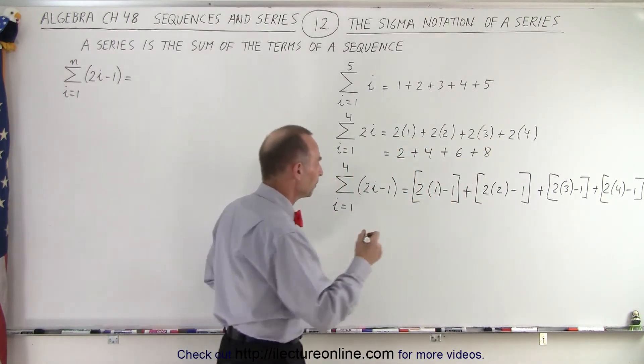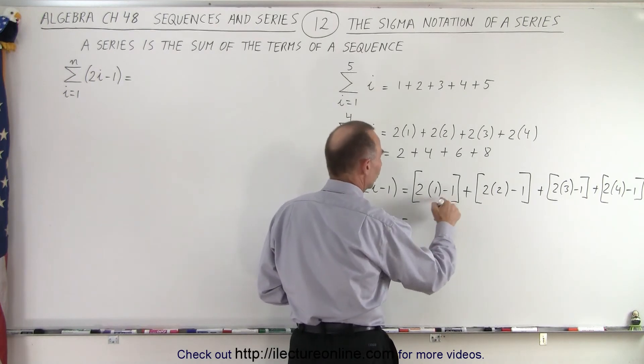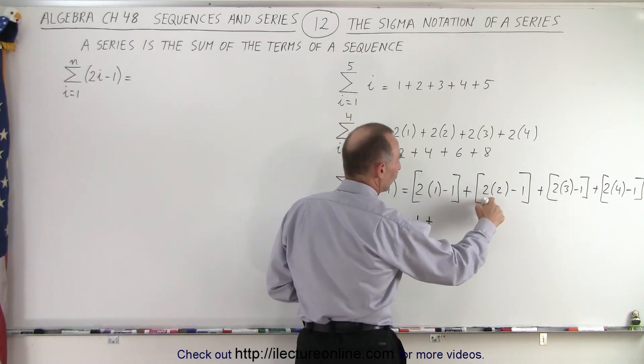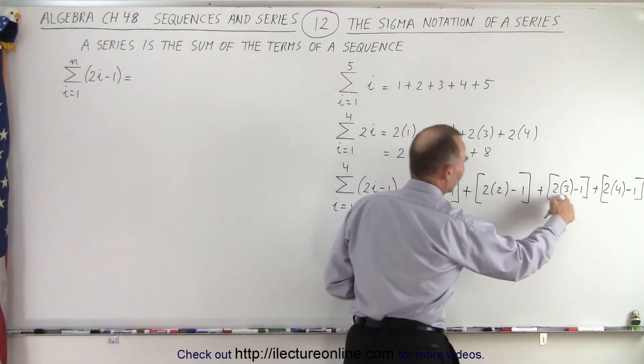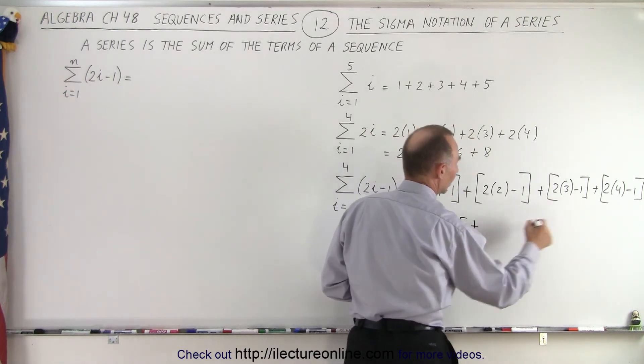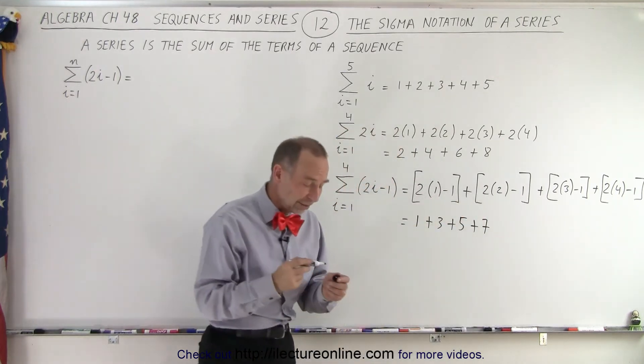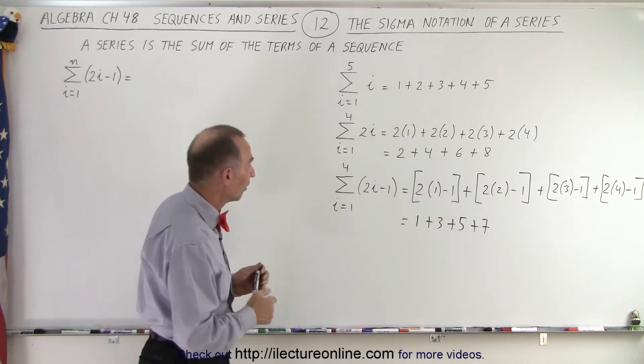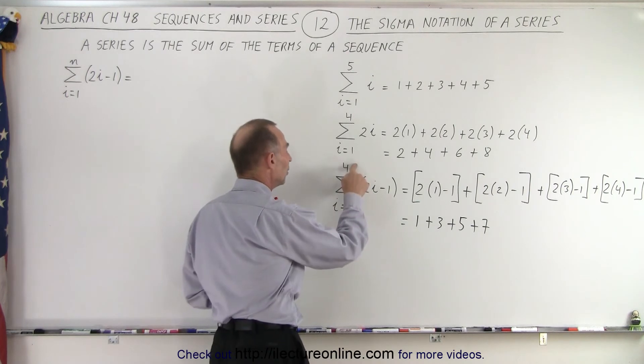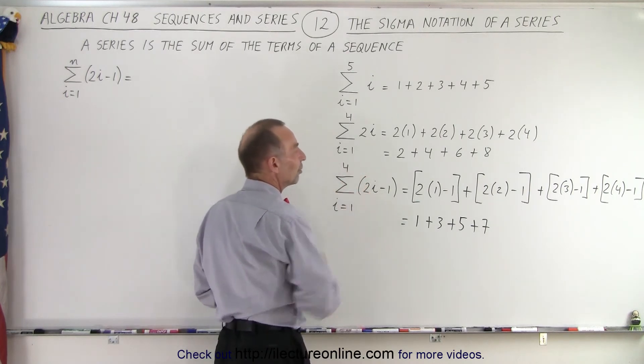Well let's finish it up. So this is equal to 2 minus 1 which is 1 plus 4 minus 1 which is 3 plus 6 minus 1 which is 5 plus 8 minus 1 which is 7. So that would then be the series and the result of the series i going from 1 to 4 we sum them up with 2i minus 1.